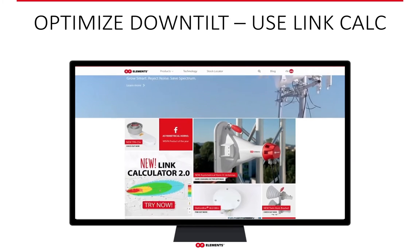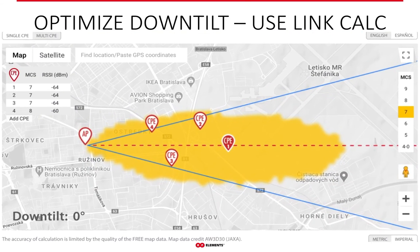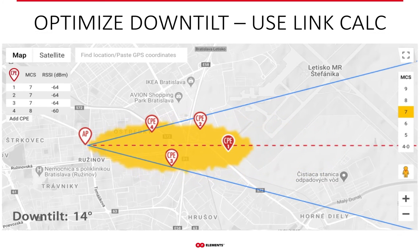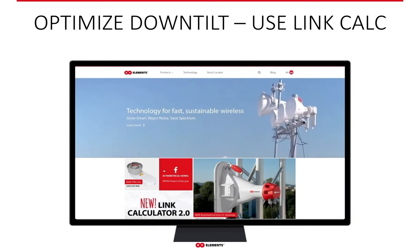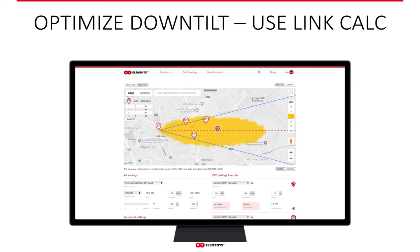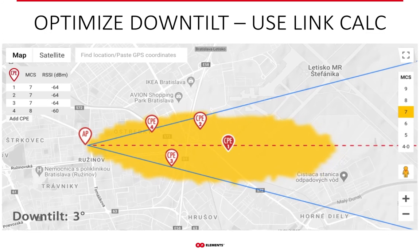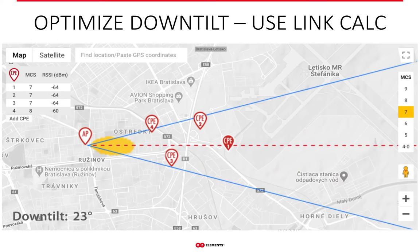So how do you figure out the down tilt you should be using with Horns? Our link calculator provides a very precise and clear answer. Using the point-to-multipoint calculator on our webpage, you can see how coverage changes with increasing down tilt, so you can easily optimize the coverage. The calculator uses real map data and radiation pattern data as well, so it's really the closest thing to reality. It's truly the best tool to avoid having to just guess or eyeball what the down tilt should be when using Horns.